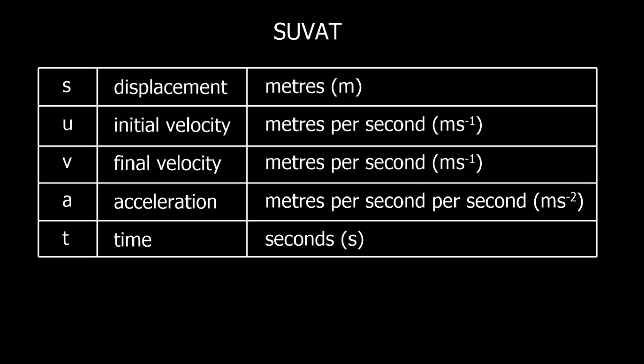In this video, we're going to look at the equations of constant acceleration. We call them the SUVAT equations because the variables involved are S, U, V, A and T — so they spell SUVAT.